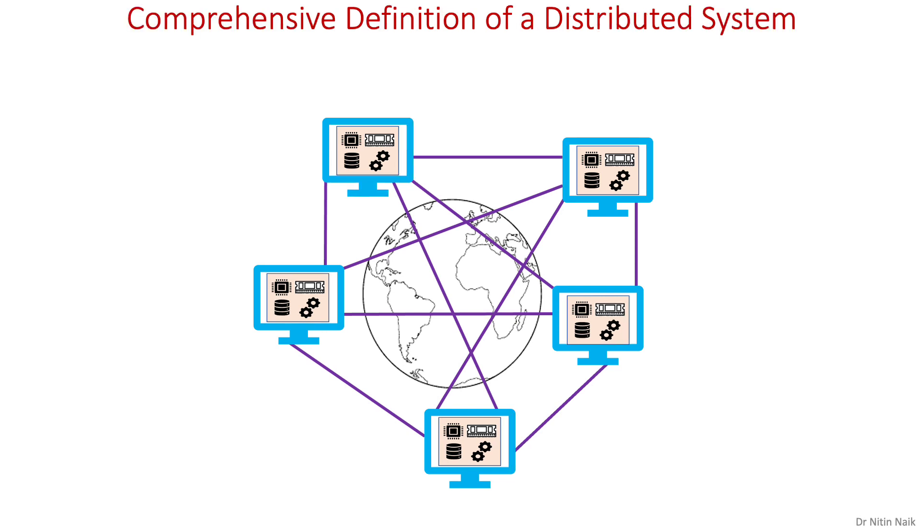So we have looked at what is a distributed system very broadly. However, it is a multifaceted field with infrastructures that can vary widely. Therefore, it is not easy to define all types of distributed systems using a common definition. Here, I am providing you a comprehensive definition of a distributed system in six steps which can cover most aspects of a distributed system if not all.